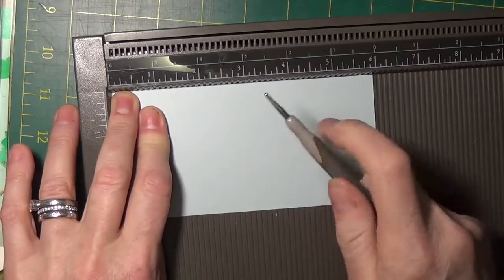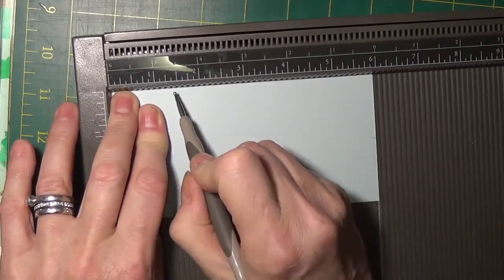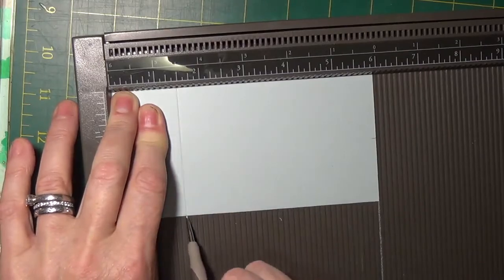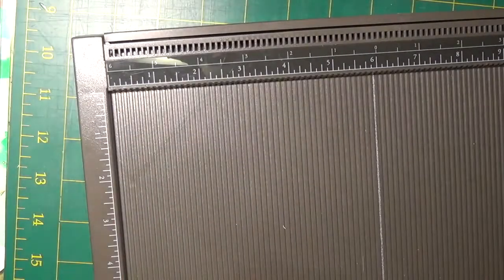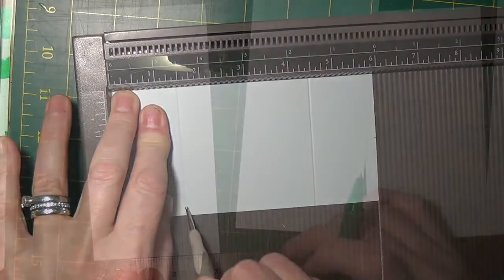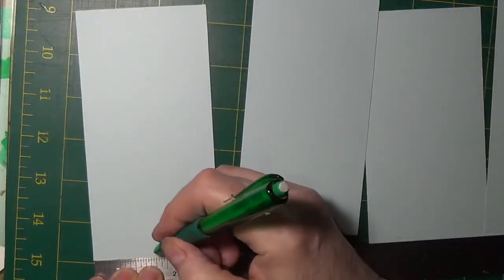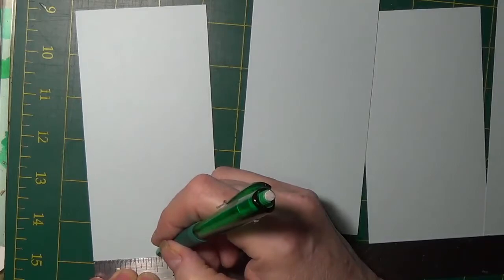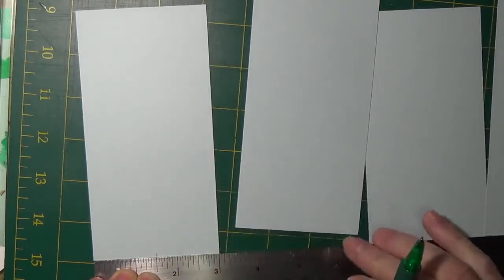You score one and a half inches and then you rotate 180 degrees and put the far corner back into the corner of the scoreboard and score again at one and a half inches. This gives you the same length or width from the edge.